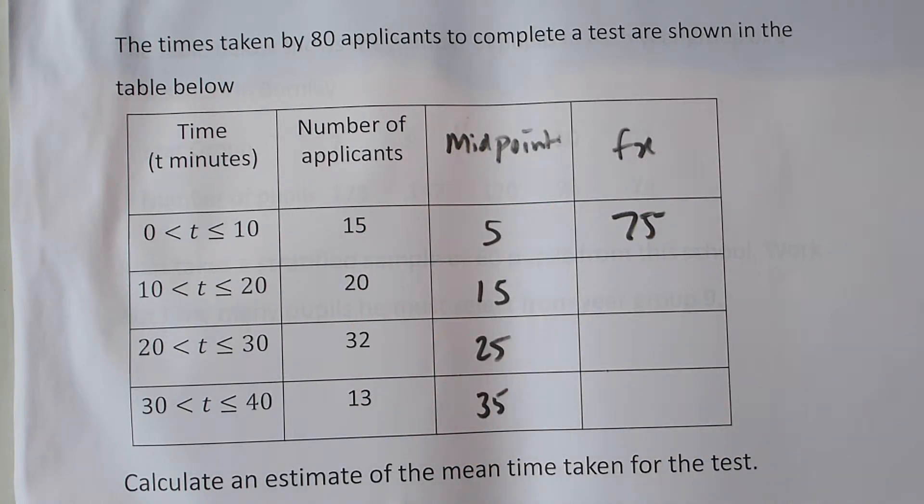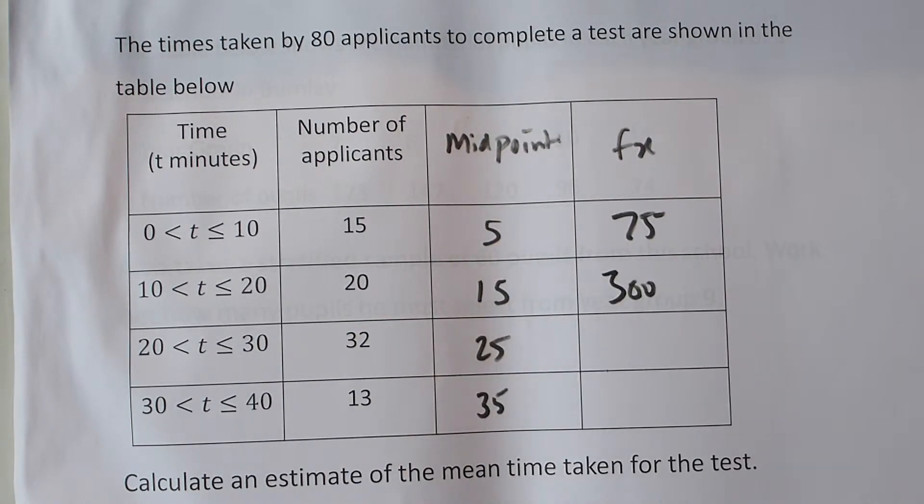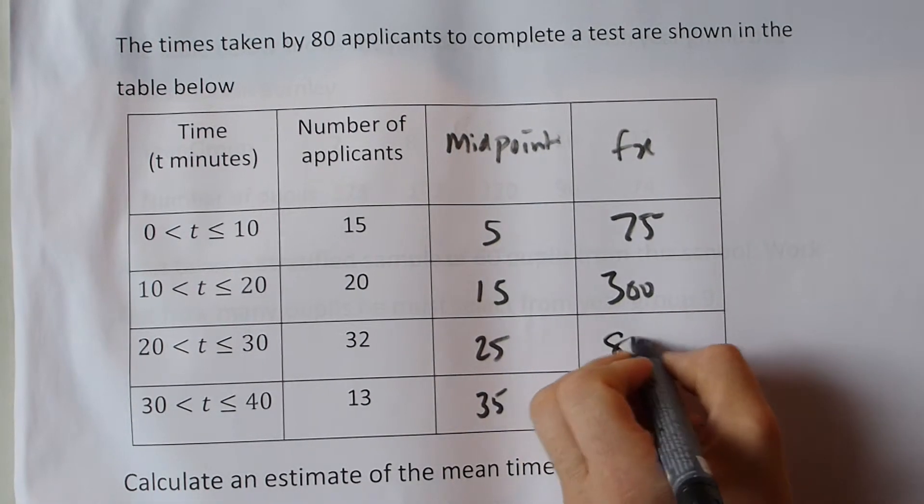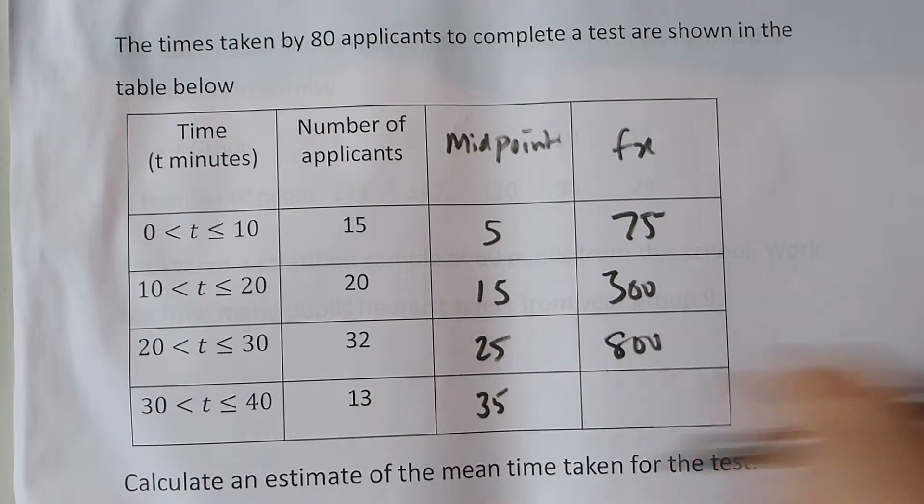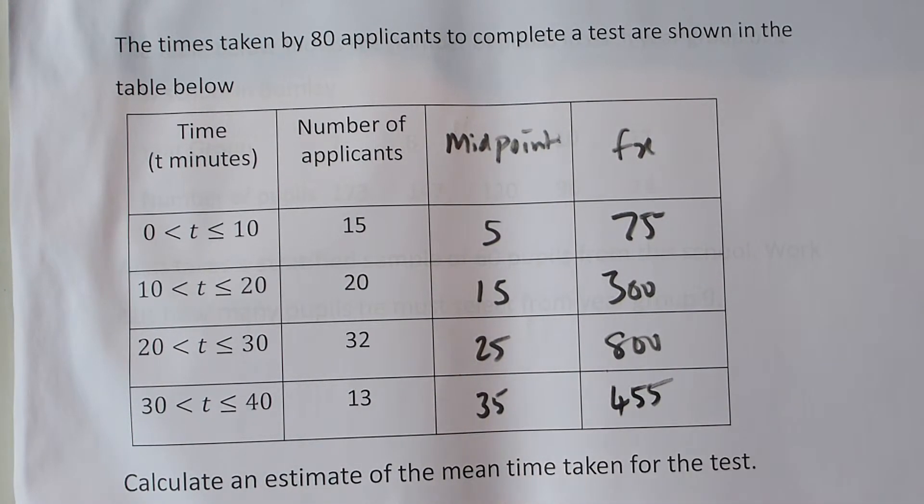Likewise with the 20 applicants taking an average of 15, that's a total of 300 minutes. The 32 applicants taking an average of 25 minutes, that's a total of 800 minutes. And the 13 applicants taking an average of 35 minutes, that's a total of 455 minutes.